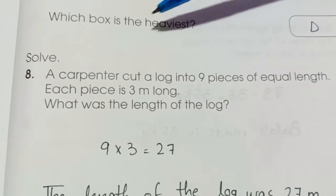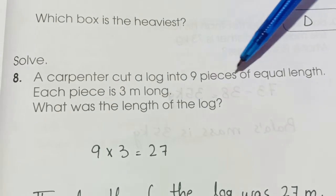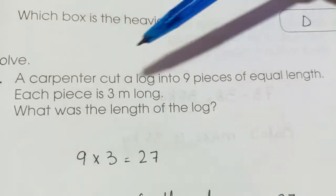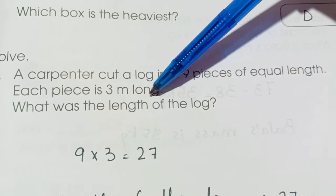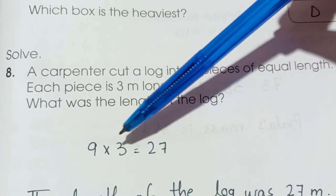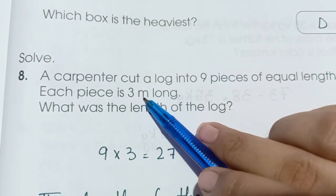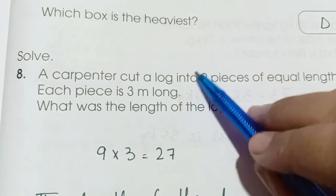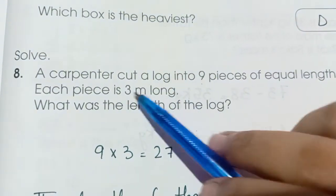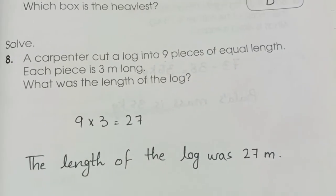Number 8. A carpenter cut a log into 9 pieces of equal length. Each piece is 3 meters long. What was the length of the log? 9 multiplied by 3 is 27. Because each piece is 3 meters long and he cut 9 pieces. To find the total, we multiply the number. The length of the log was 27 meters.